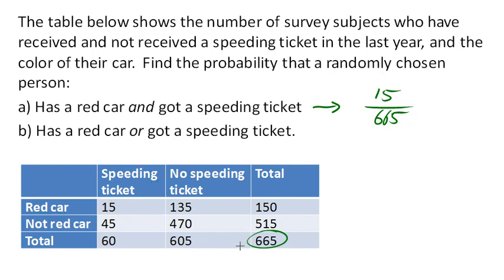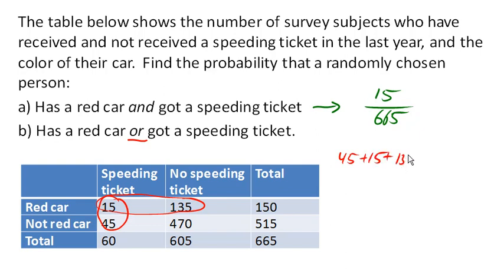How about for the next one? We're trying to find the probability that they have a red car or got a speeding ticket. There are a couple of ways we could go about this, but the easiest is to just add up all the possibilities. These people got a speeding ticket, these people have a red car. So we have a total of 45 plus 15 plus 135, which is 195 total people who either got a speeding ticket or had a red car. So our probability would be 195 out of 665.